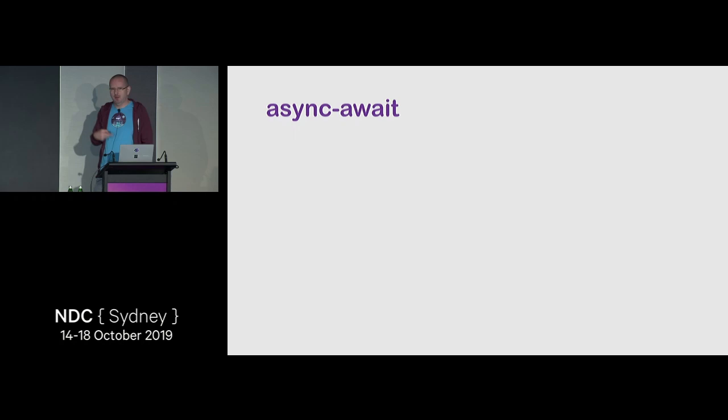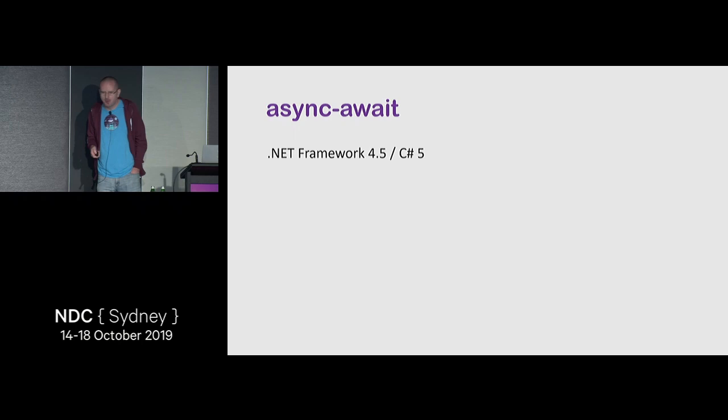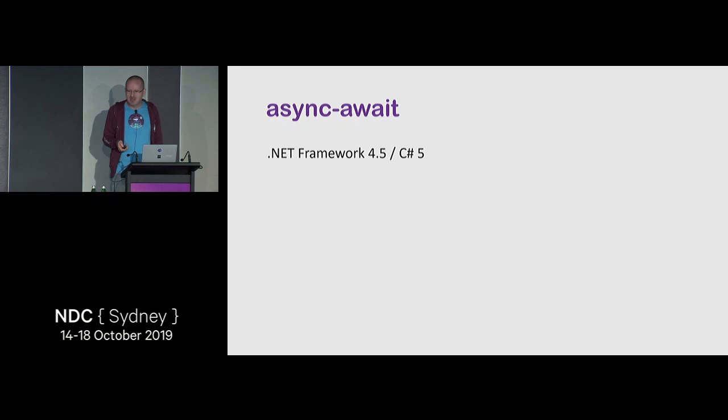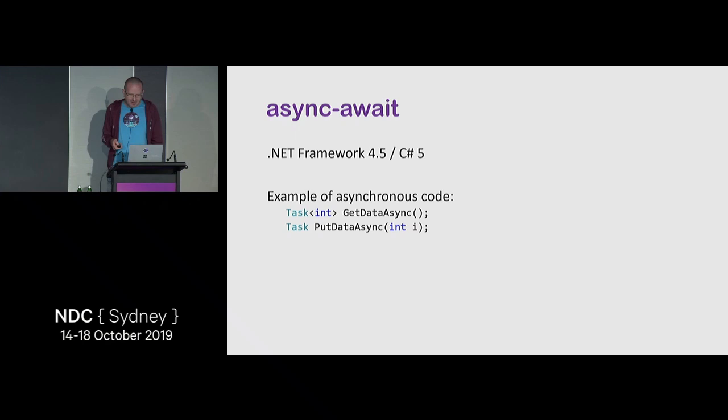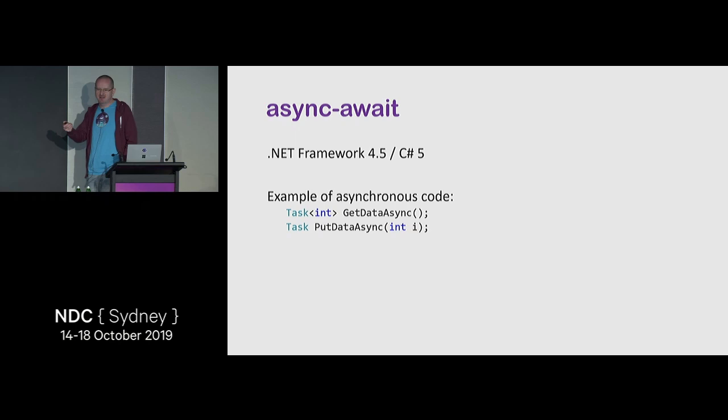Let's go to async/await. That came out in .NET Framework 4.5, the next major version after 4.0 where Task was introduced. You can see the pattern: we introduced pieces, then the next release builds on them meaningfully. Imagine you have methods like GetDataAsync and PutDataAsync that do something across network or I/O.